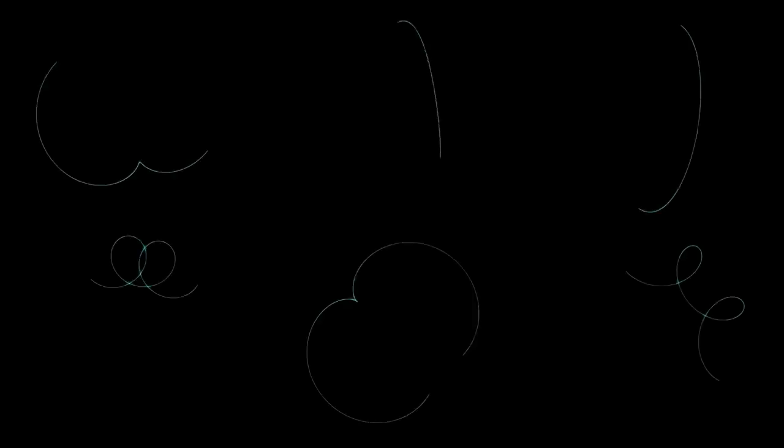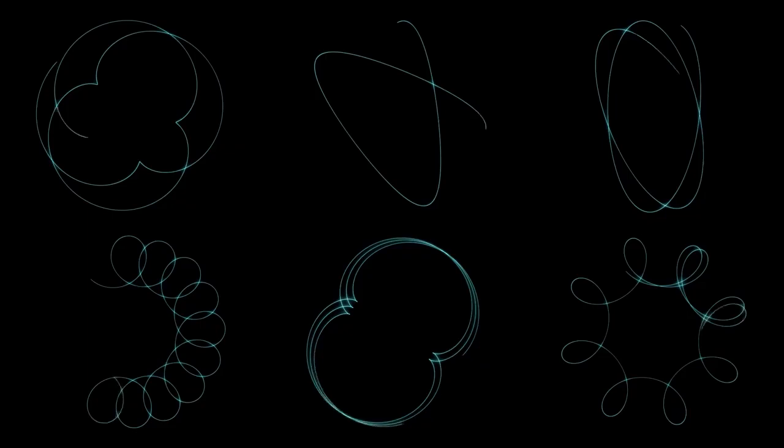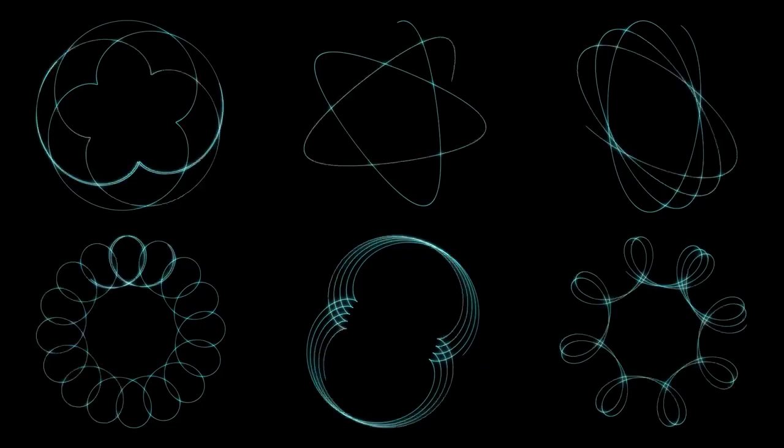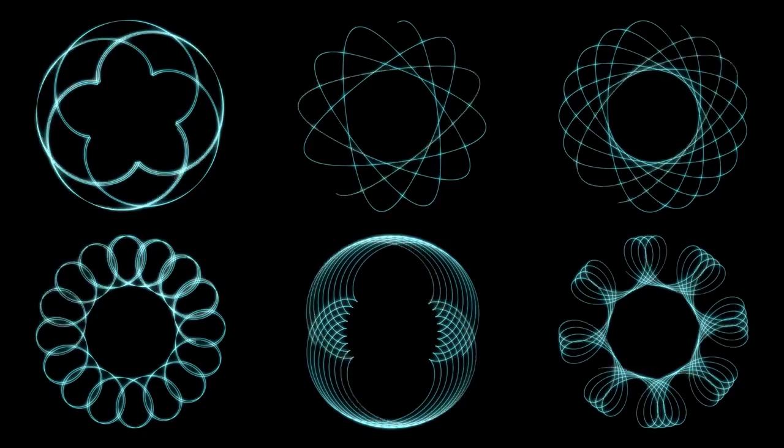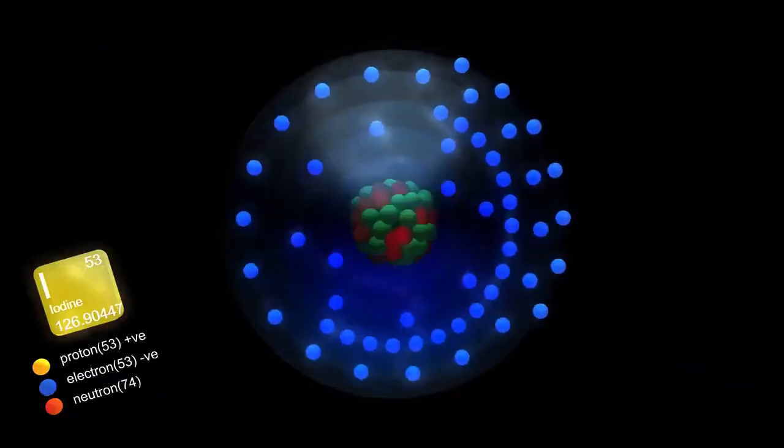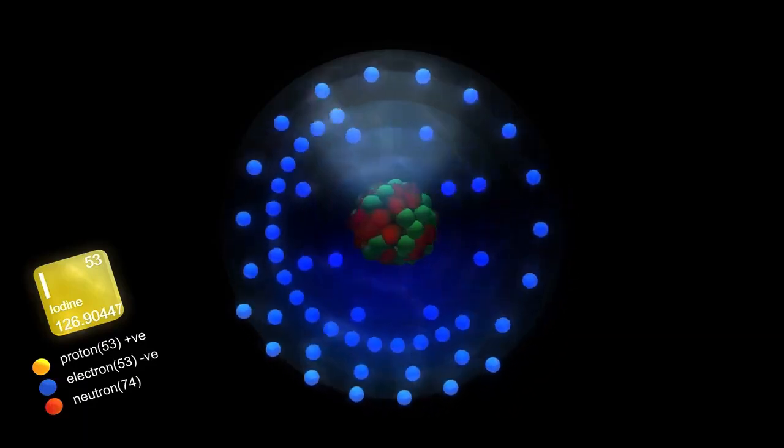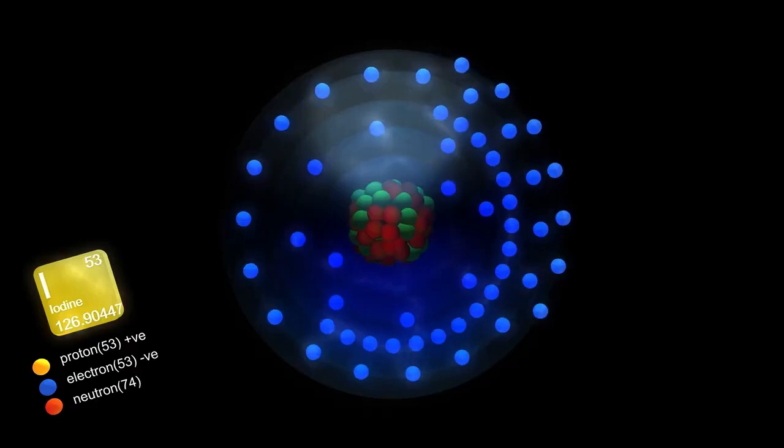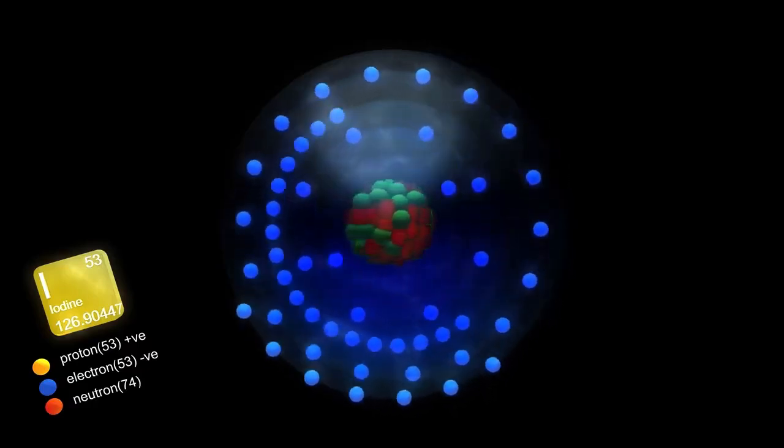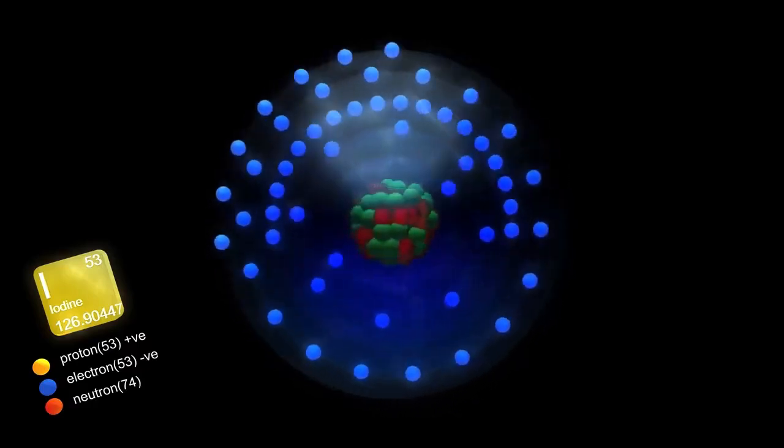Physics allows us to trace the timeline even further back to physical processes that predate stable matter. This takes us to the so-called Grand Unified Epoch. At this stage, we are in the realm of speculative physics, as our experiments cannot produce the energy levels necessary to probe these early processes. However, a plausible hypothesis suggests that the physical world was made of a soup of short-lived elementary particles, including quarks, the building blocks of protons and neutrons.